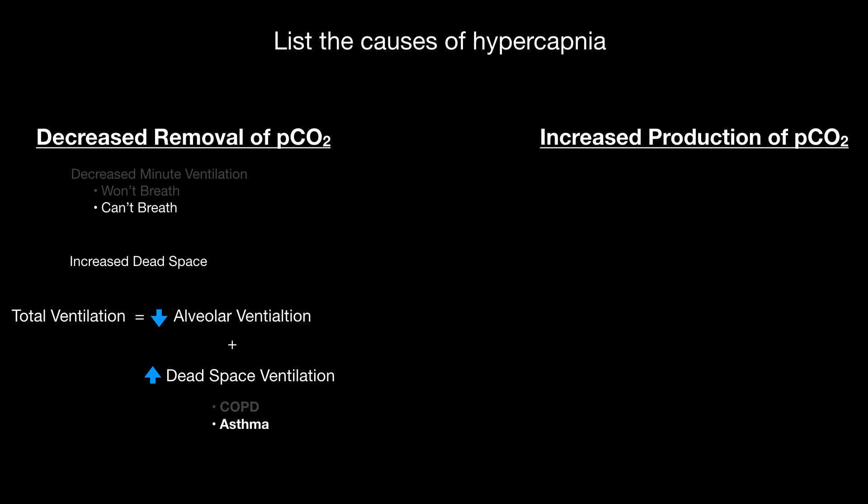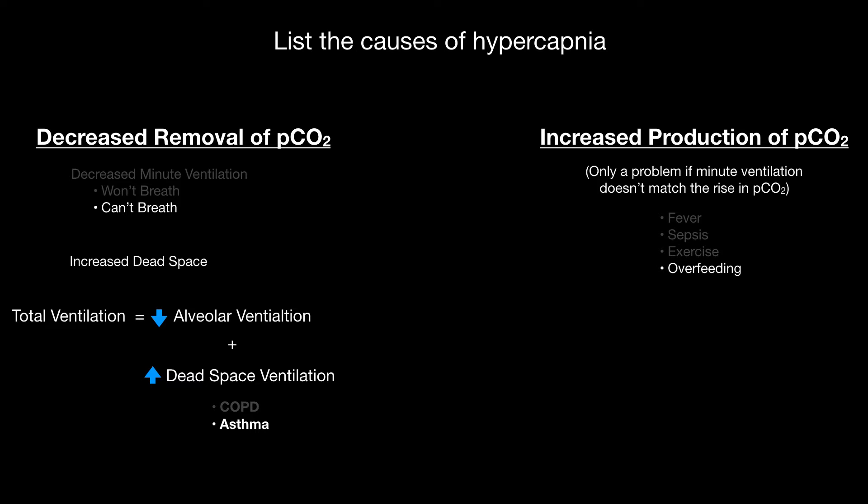Increased production of CO2 is only a problem if minute ventilation doesn't match the rise in PCO2. Things like fever, sepsis, exercise, and overfeeding cause increased CO2 production. Most of the time when we have fever or sepsis, we breathe faster to get rid of our CO2. But if you have another respiratory illness on top of your fever or sepsis and you try to breathe faster but just can't, that 'can't breathe' mechanism combined with increased production can cause profound hypercapnia.